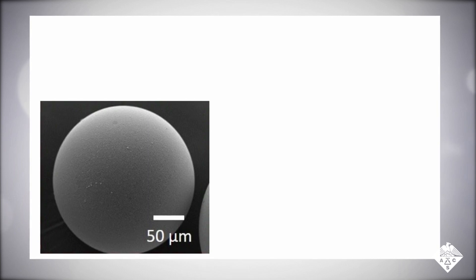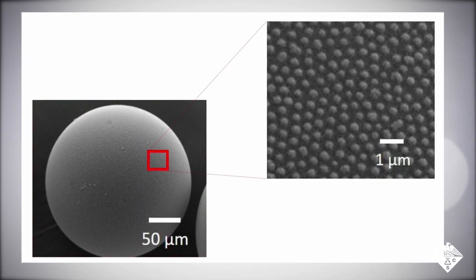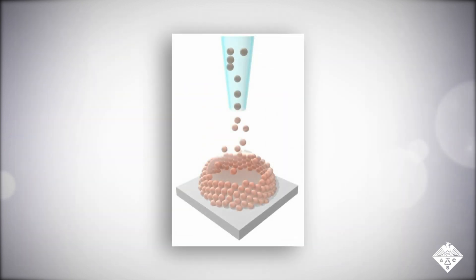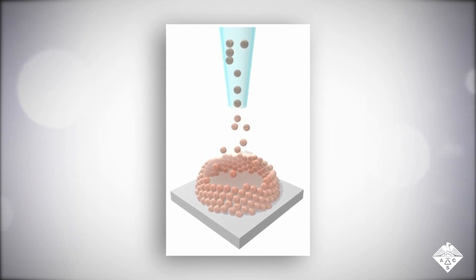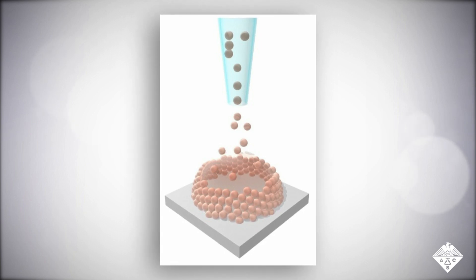To make each microlens, the researchers used a microfluidic device to produce oil droplets that were coated with silica nanoparticles. Then they organized many of these microlenses into a closely packed array around a larger oil droplet. They locked the structure in place with UV light.